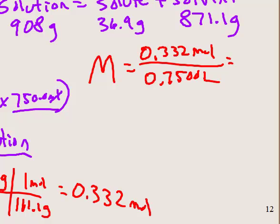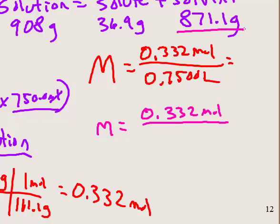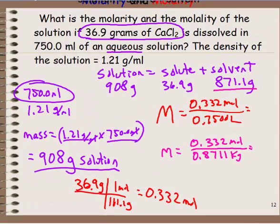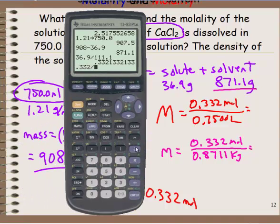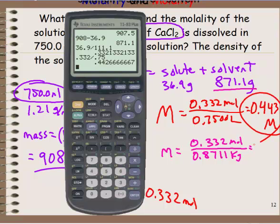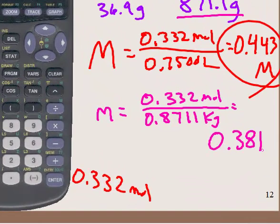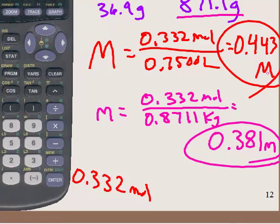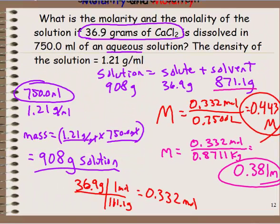Molarity equals 0.332 divided by 0.75, giving 0.443 capital M — moles per liter of solution. For molality (little m), we divide moles of solute by kilograms of only the solvent: 0.332 divided by 0.8711 kilograms of water gives 0.381 lowercase m. This is a 0.443 molar solution and a 0.381 molal solution. We need the density to convert between the two.